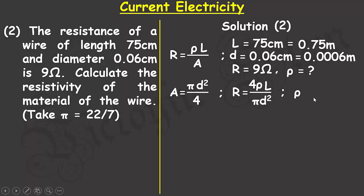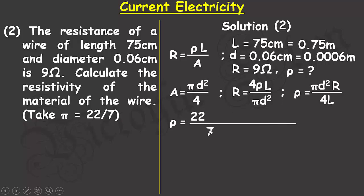Making resistivity the subject, rho equals pi d squared multiplied by the resistance divided by 4 multiplied by the length. Plugging in values: pi is 22/7, d is 0.0006 squared, the resistance is 9 ohms, and the denominator has 4 multiplied by the length 0.75 meters.